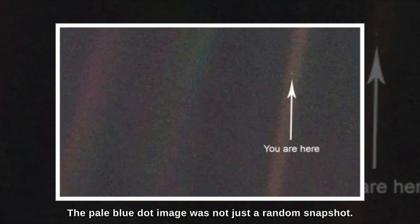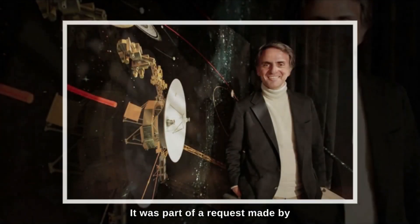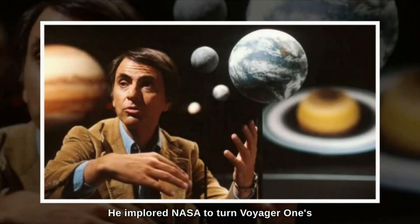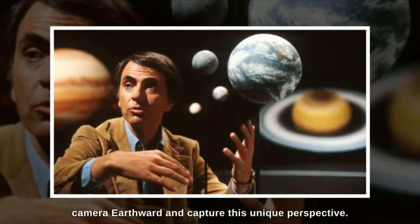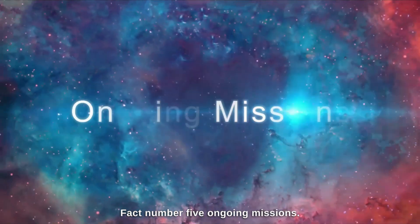The Pale Blue Dot image was not just a random snapshot. It was part of a request made by the renowned astrophysicist and science communicator, Carl Sagan. He implored NASA to turn Voyager 1's camera Earthward and capture this unique perspective.